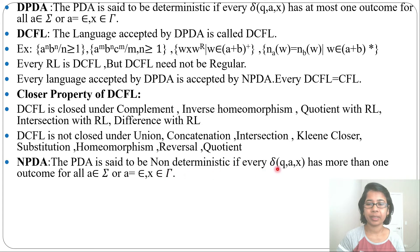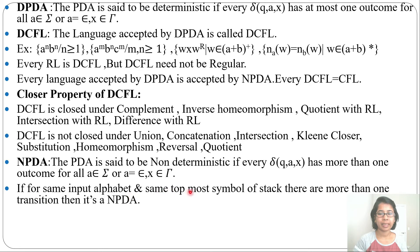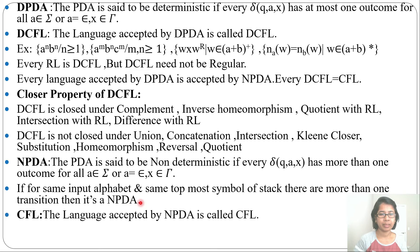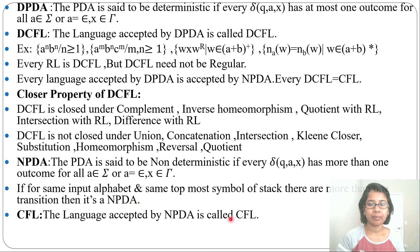Next is NPDA. A PDA is said to be non-deterministic if every delta(q, a, x) has more than one outcome, for all 'a' belonging to the alphabet or 'a' equal to epsilon, and x belonging to some stack symbol. If for the same input alphabet and same topmost symbol of the stack there are more than one transition, then it is an NPDA. The language accepted by NPDA is called CFL.